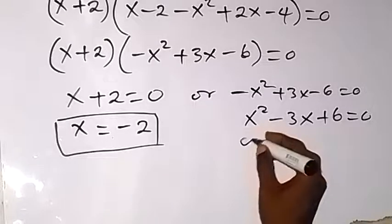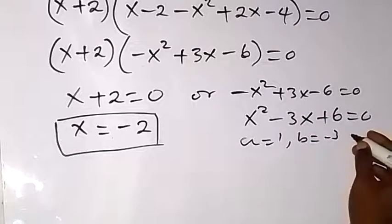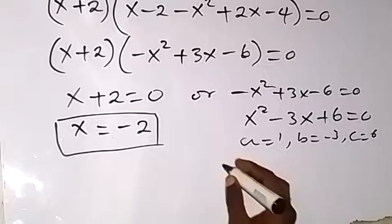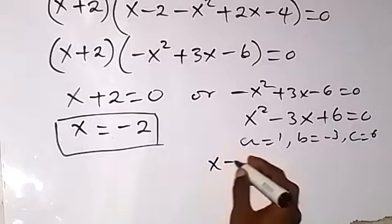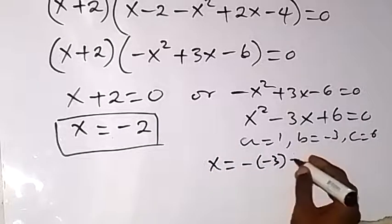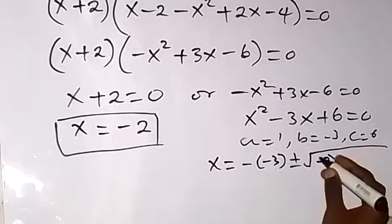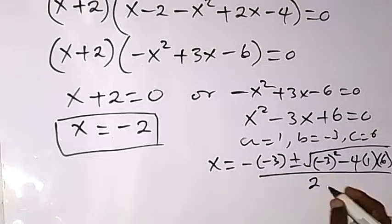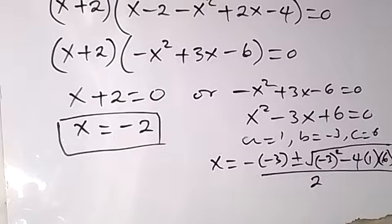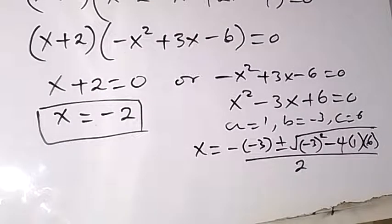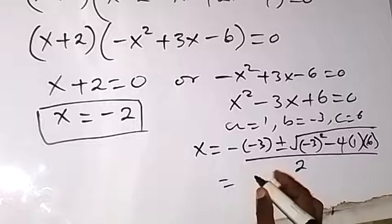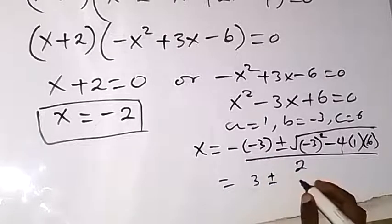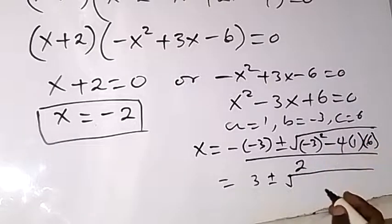We can solve this one using the quadratic formula. Finding x here, our a is 1, our b is minus 3, then our c is 6. So we apply the formula: x equals minus b, that's minus of minus 3, plus or minus square root of b squared, that's minus 3 squared, then minus 4ac, where a is 1 and c is 6, divided by 2a, that's 2 times 1, over 2. When we solve this we have 3 plus or minus square root of 9 minus 24, which is 4 times 6, giving minus 15.